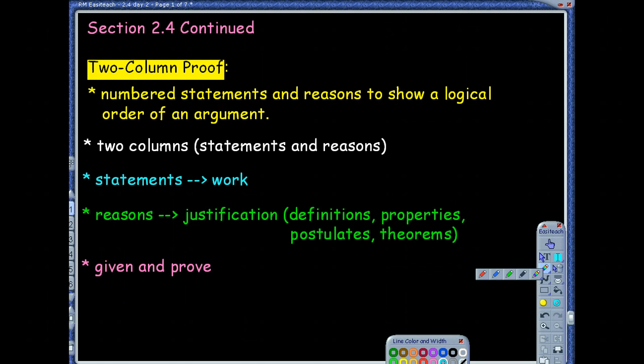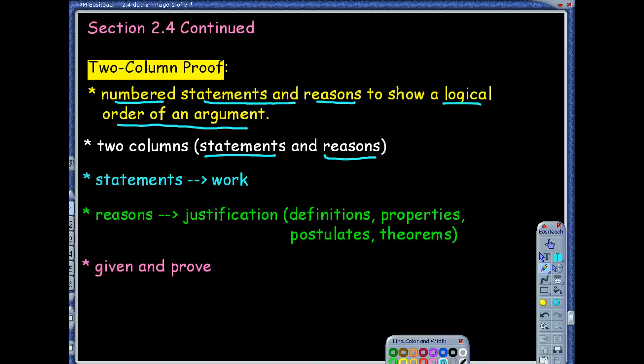You're going to have in those two columns numbered statements and reasons to show a logical order of your argument or your proof. So you're going to obviously have two columns. One column is your statements and reasons. So when we did an algebraic proof yesterday, that work from working through the actual algebraic equation.